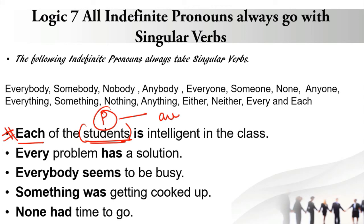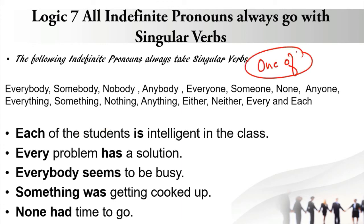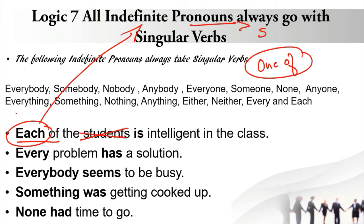Each is singular; verb 'is' is singular — they match. Pattern is the same as 'one of my friends,' but in place of 'one' we have 'each.' Next: 'Every problem has a solution.' Subject is 'every' — an indefinite pronoun, singular. Verb 'has' is singular. They match. Next: 'Everybody seems to be busy.' Subject is 'everybody' — indefinite pronoun, singular. Verb 'seems' is singular. They match.